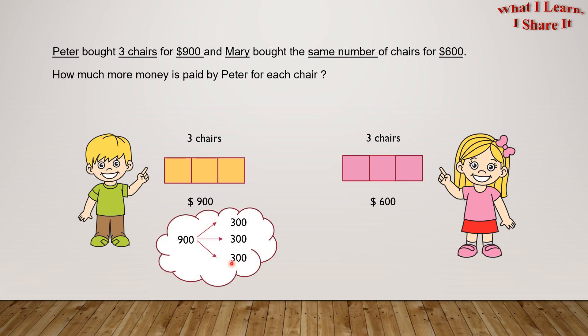In the same way, if $900 has to be divided into three parts, then each part will be $300. So one chair for Peter equals to $300. So Peter paid $300 for each chair.